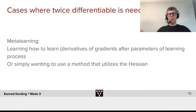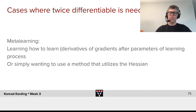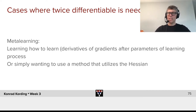There are, of course, cases where we need functions to be twice differentiable — for example, in meta-learning, where we learn to learn and therefore have to calculate the derivative of gradients with respect to the parameters of the learning process. Or maybe we simply want to use an optimization method that uses a Hessian. You will hear some about this in the future.